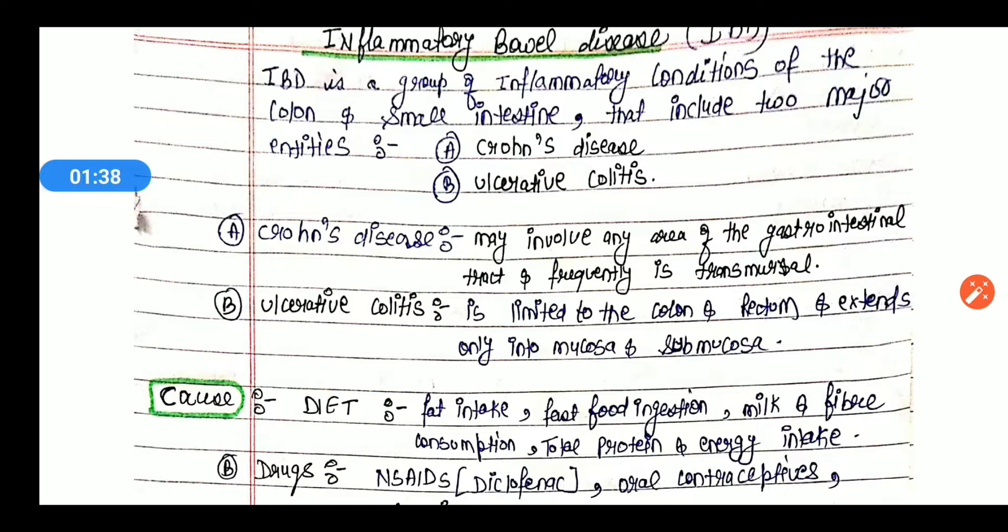Second is ulcerative colitis. Ulcerative colitis is limited to the colon and rectum. It extends only into the mucosa and submucosa layer. It does not extend throughout the GIT. So this is the major difference between Crohn's disease and ulcerative colitis.